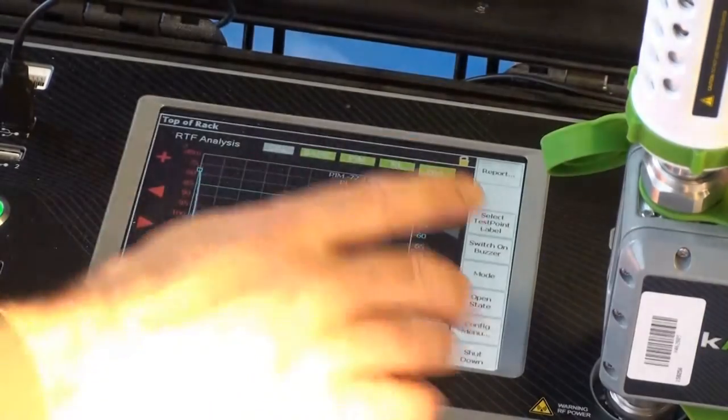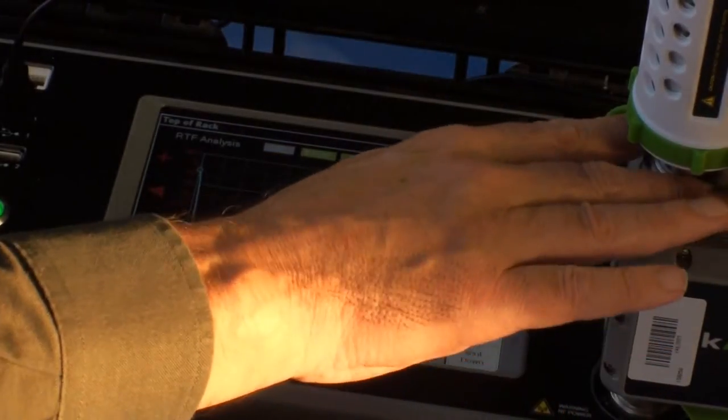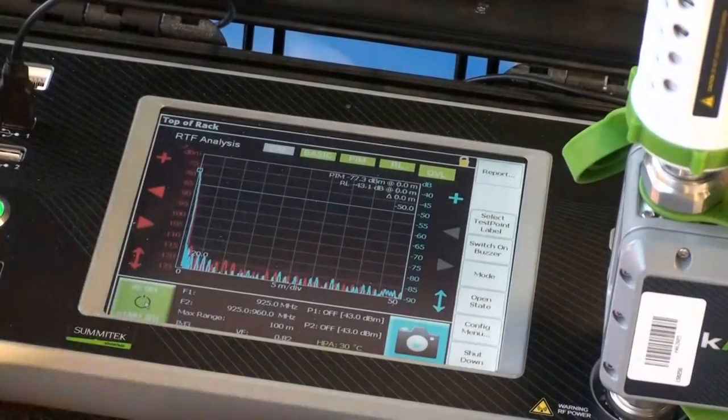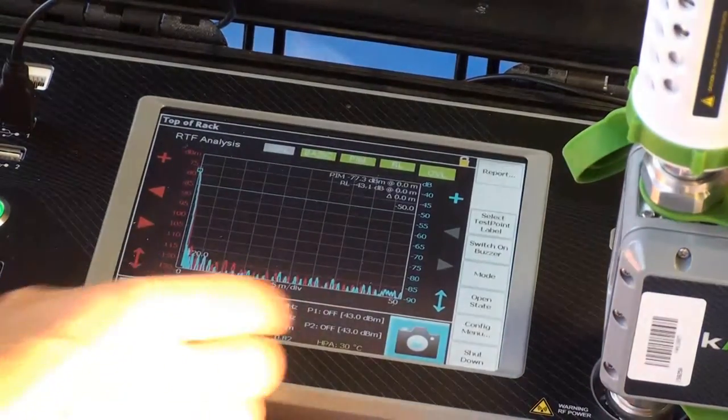And also return loss of minus 43 at zero. So what that's saying is that, at this point, we have a PIM source and everything is zero. So we can see that everything is low and we're ready to make a measurement. Okay.